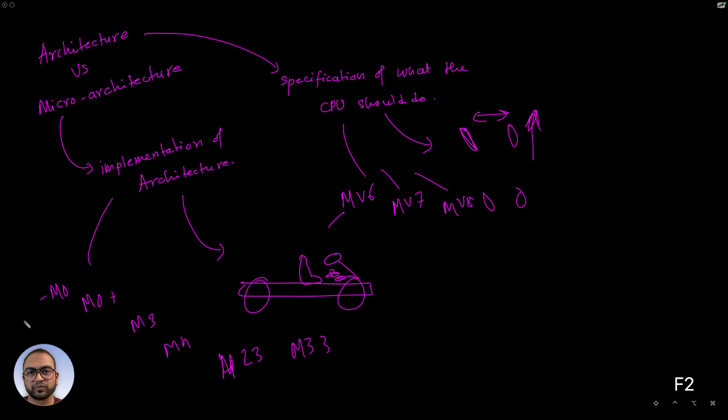When you do a Google search you will come across the M-class CPUs as Cortex M0, Cortex M0+, Cortex M3, M4, and so on. These are essentially implementations of different M-class architectures.